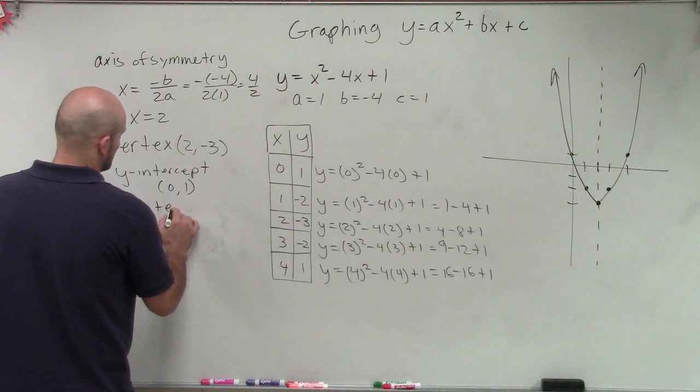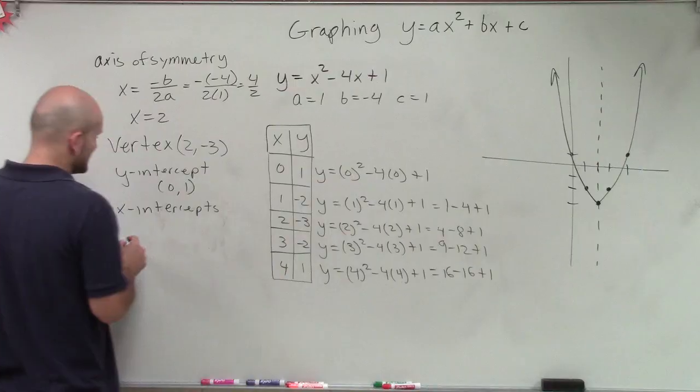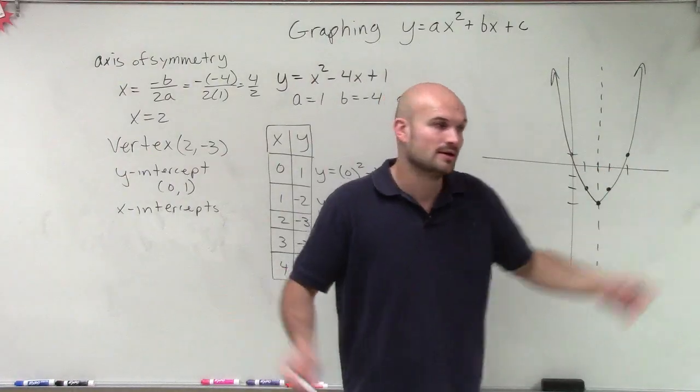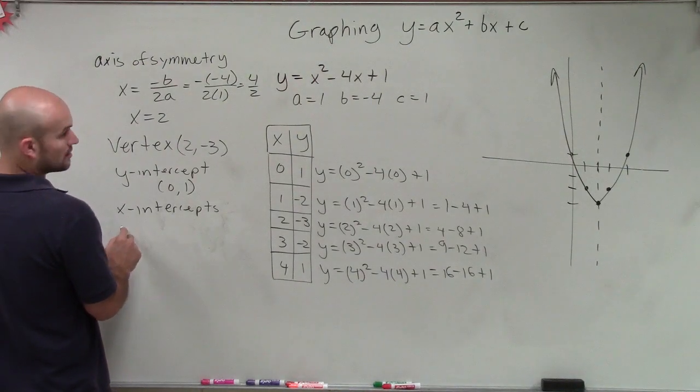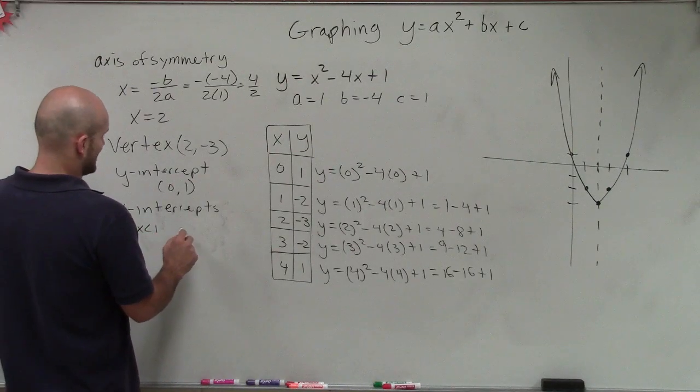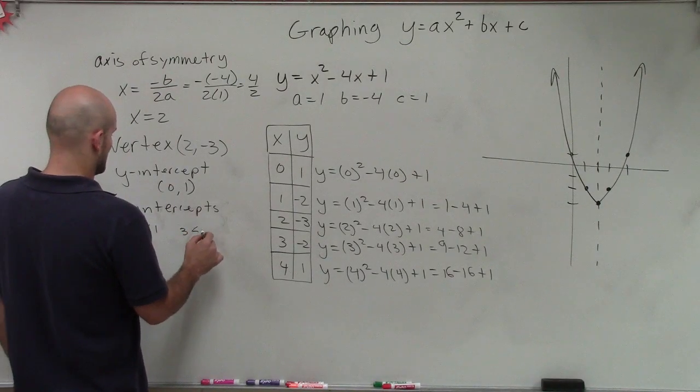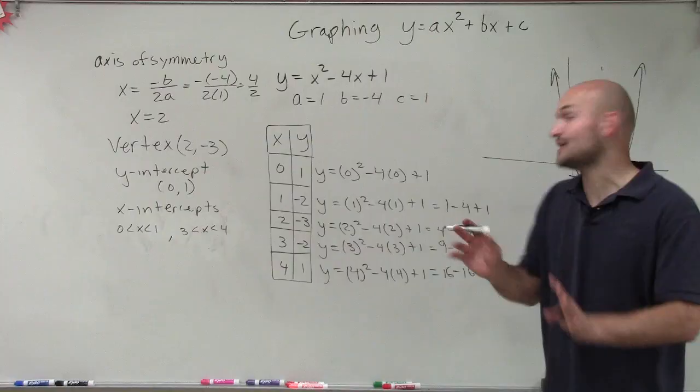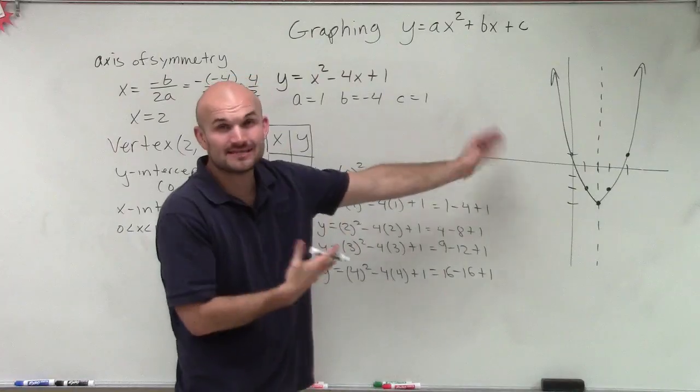However, it doesn't look like we have some exact values for our x-intercepts. But we do have two values. So I'm just going to estimate here. Our x-intercepts are going to be between 0 and 1, and the other x-intercept is between 3 and 4. So we can say 0 is less than x which is less than 1, and 3 is less than x which is less than 4. This is not a very scientific way, but I'm just trying to estimate for us. We're going to learn how to find these exact values later. But for right now, I just want to know how to graph it and then just estimate or find our exact points.